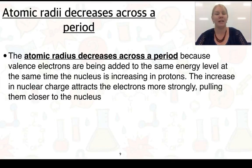I wanted to add an explanation as to why the atomic radii decreases across a period and increases down a group. The atomic radii decreases across a period because valence electrons are being added to the same shell or the same energy level. At the same time, the nucleus is increasing in protons. The increase in the nuclear charge attracts the electrons more strongly and therefore pulls them closer to the nucleus. And so we see the atomic radii decreasing.